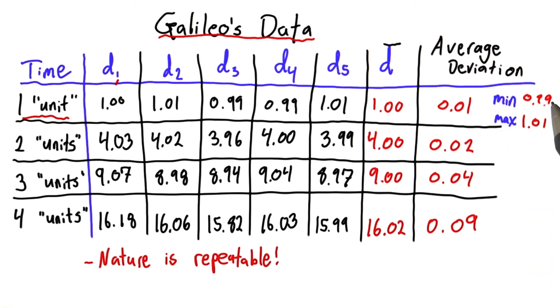This is 1 minus 0.01, 1 plus 0.01. What would be the minimum and maximum possible true distances for this example?